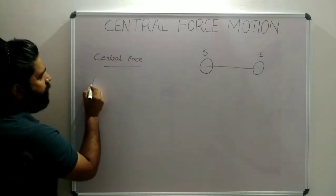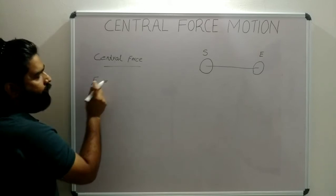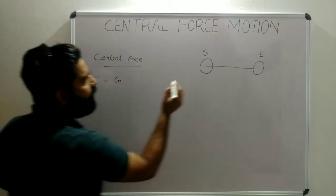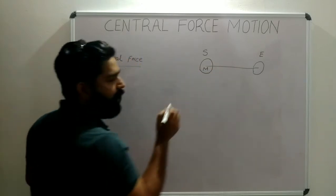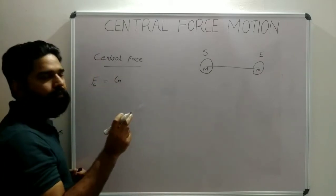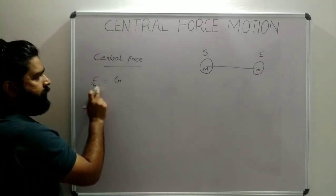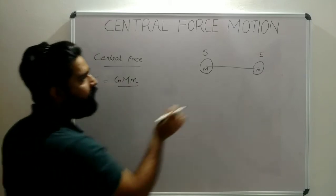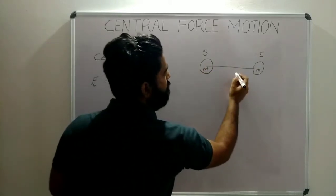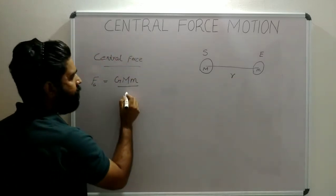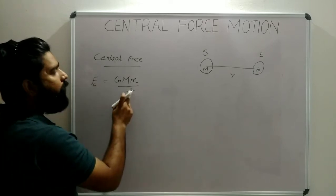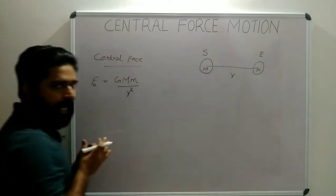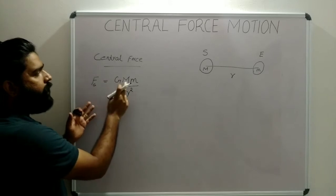The sun attracts the earth using its gravitational force, and this force can be written as: the gravitational force Fg is equal to G times the mass of sun, capital M, times the mass of earth, small m, divided by the distance between the center of sun and earth, represented by r. According to the inverse square law, Fg = GMm / r².